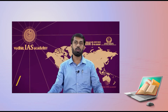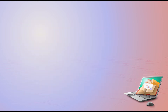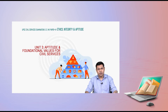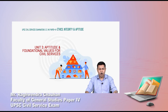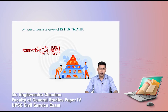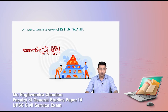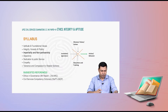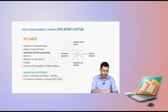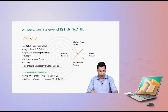Where could we see oligopoly? Let us now move to another topic of Unit 3 of your Ethics syllabus, and the topic is impartiality and non-partisanship.